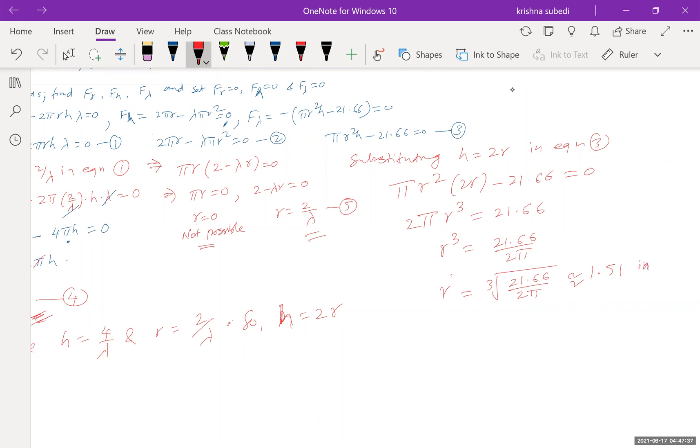So you guys got the value of r as 1.51 and the unit is given inch. So I simply write inch here. And now, therefore, h will be, h is 2r. So that means 2 times r is 1.51. That's going to give me 3.02 inch. Am I right? So we calculated r and h already.